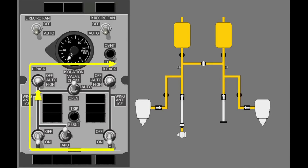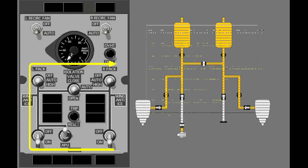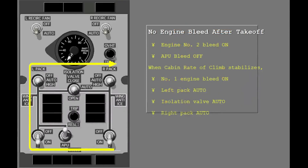Make sure the left pack is in auto. Turn the isolation valve switch to auto. Then make sure the right pack switch is in auto. The sequence of steps sets the bleed air system for normal flight, while the flow of bleed air to at least one pack continued.